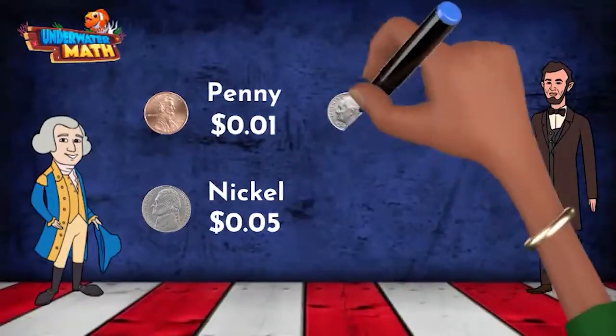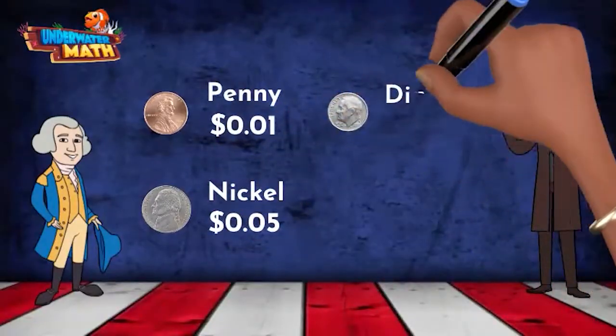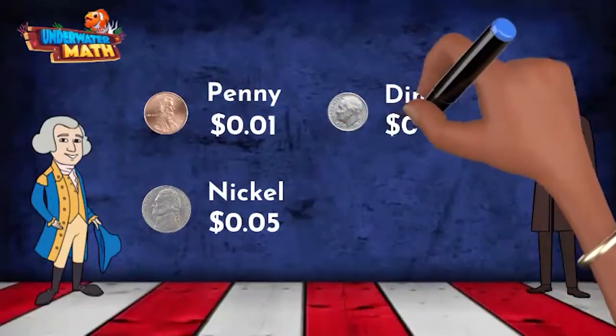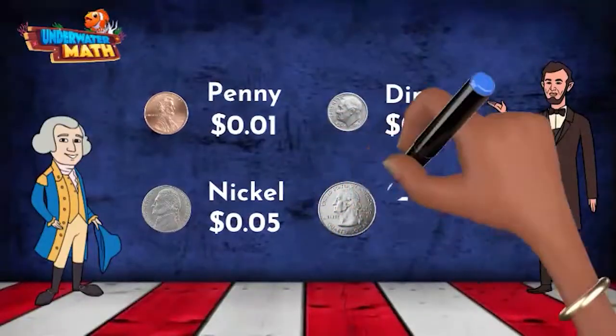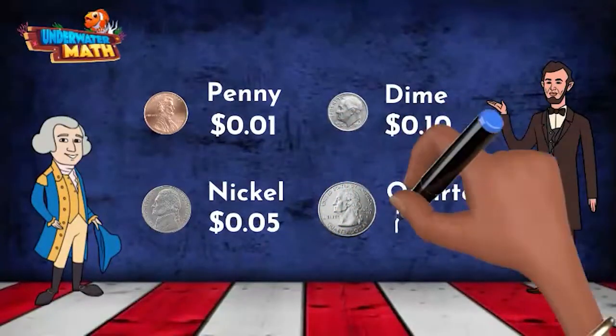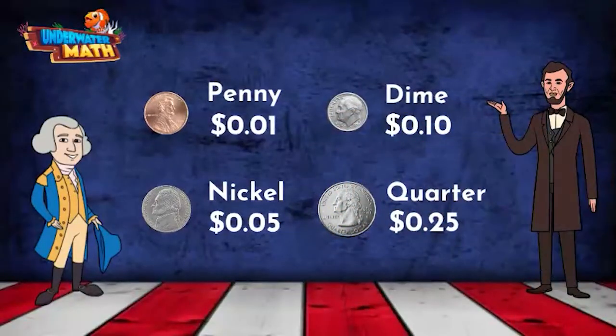And the dime is valued at 10 cents. The greatest coin ever, the quarter, is worth 25 cents. Look how beautiful it is. I get it — that's your face on the quarter. We know.